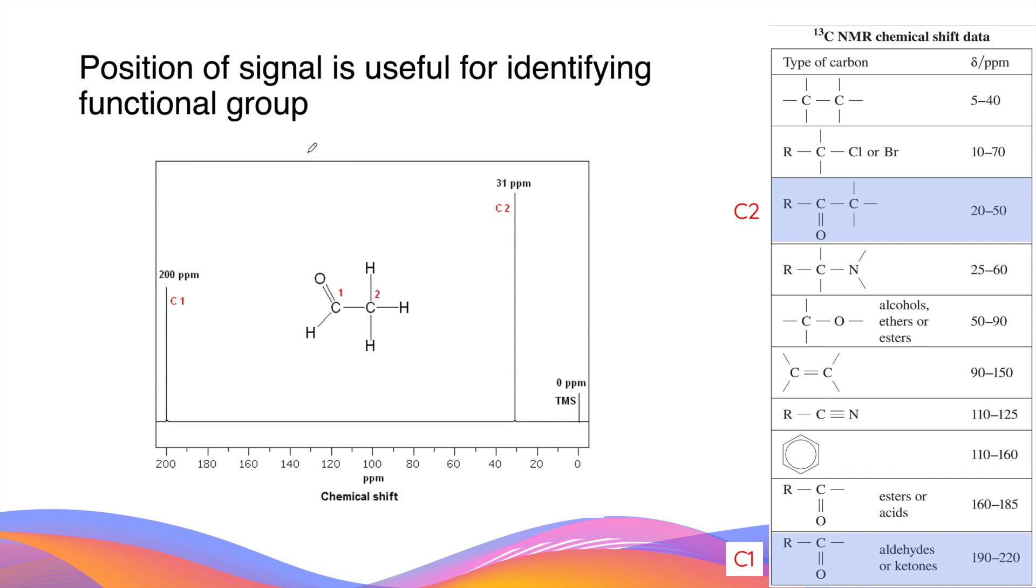Furthermore, apart from the number of signals that's present, the actual position of the signal, that is the chemical shift, is also useful for identifying the functional group of the molecule.